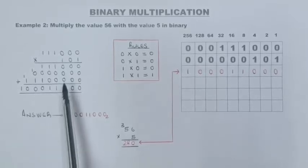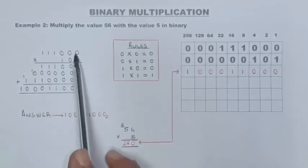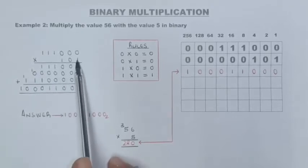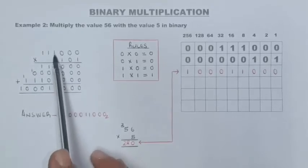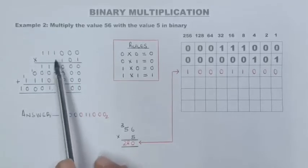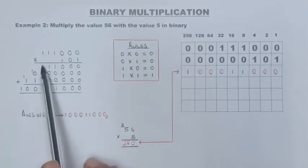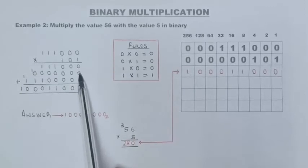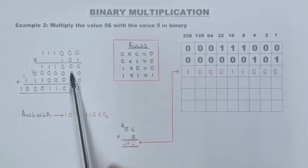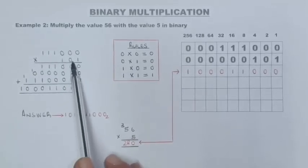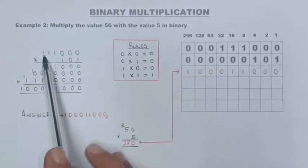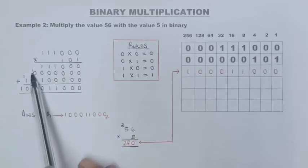So let's calculate. One times zero is zero. One times zero is zero. One times zero is zero. One times one is one. One times one is one. One times one is one. Again, placeholder because I'm starting in the second column with the second digit — here we have all zeros because anything multiplied by zero gives zero.